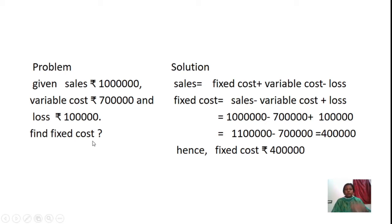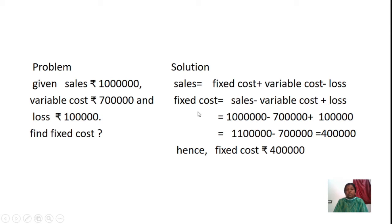The solution: Sales = Fixed Cost + Variable Cost − Loss. Using this formula, we find fixed cost. Fixed cost changes its place to the right side, so the signs change: variable cost becomes minus variable cost, and minus loss becomes plus loss. The formula becomes: Fixed Cost = Sales − Variable Cost + Loss.